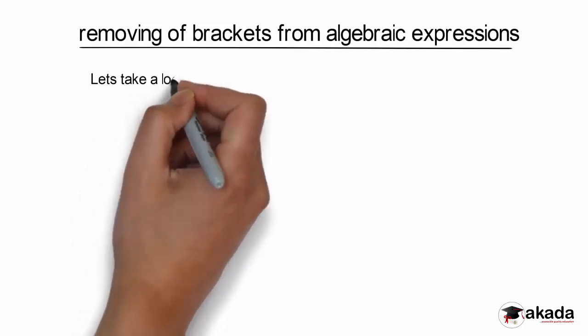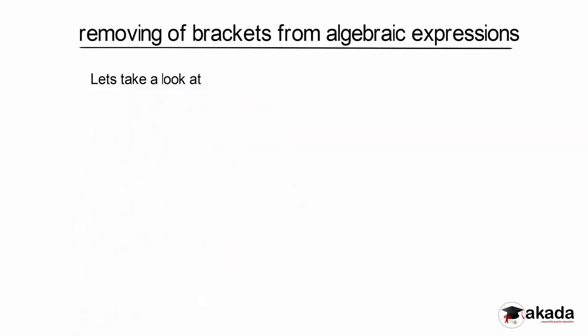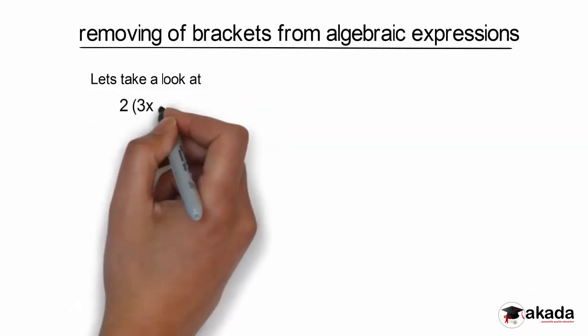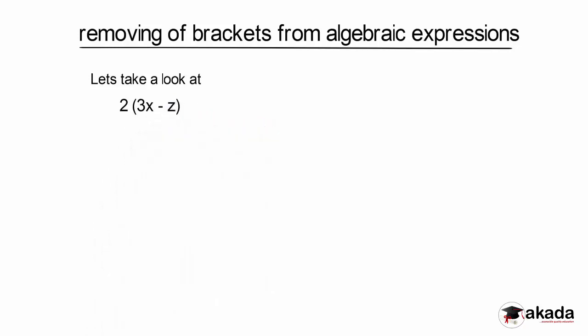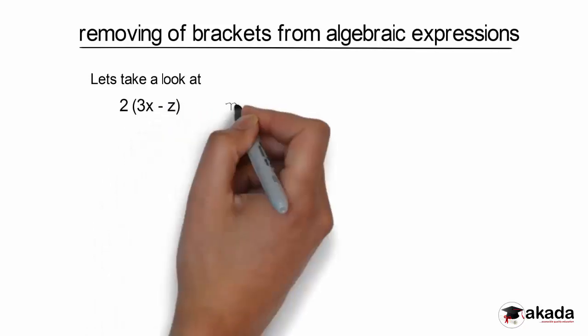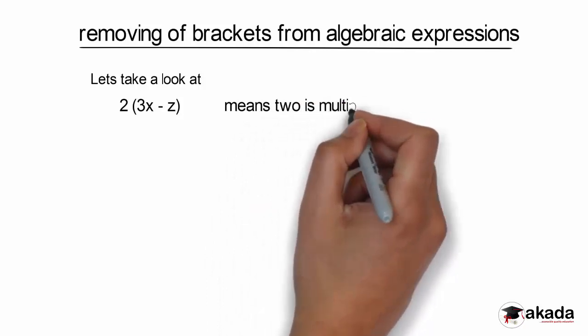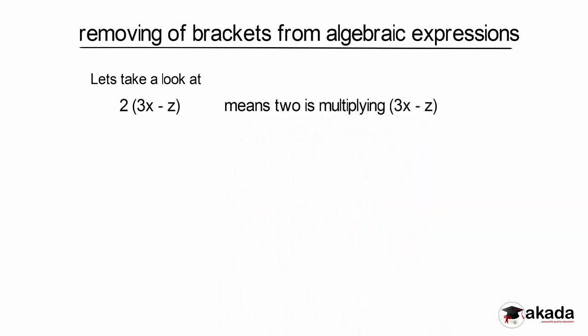Let's take a look at 2 into bracket 3x minus z. What does this mean? It means 2 is multiplying 3x minus z.